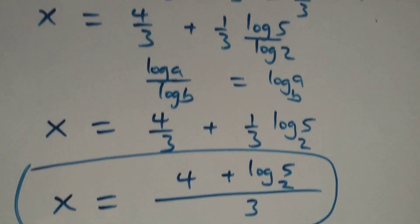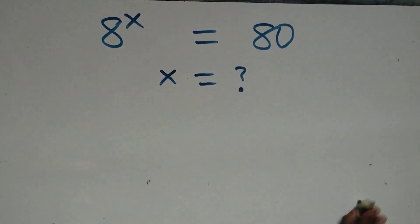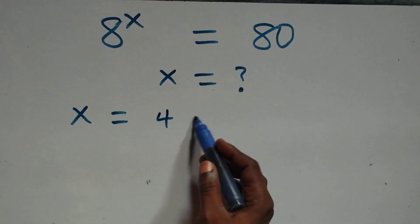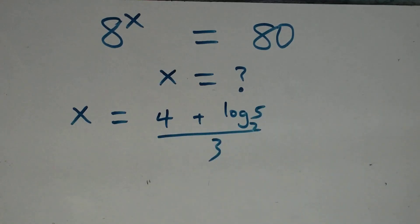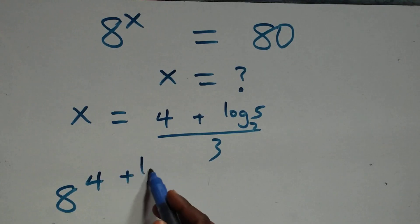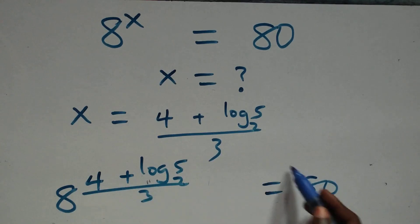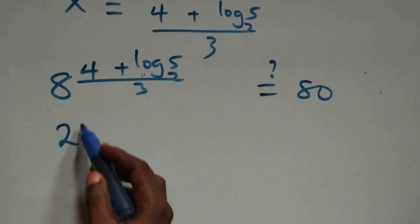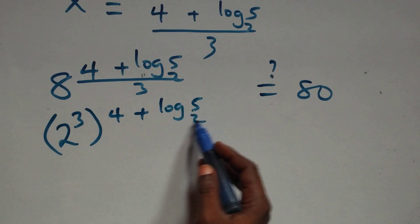Then let's check if this satisfies the given problem. We substitute x = (4 + log₂5)/3 back in, giving 8 raised to the power (4 + log₂5)/3. We can write 8 as 2³, so we have (2³) raised to the power (4 + log₂5)/3.